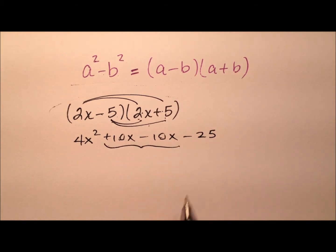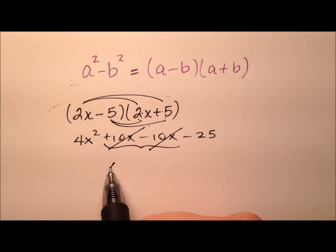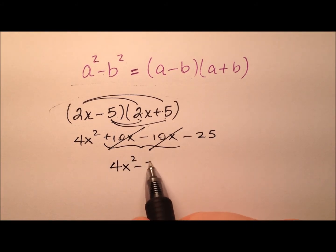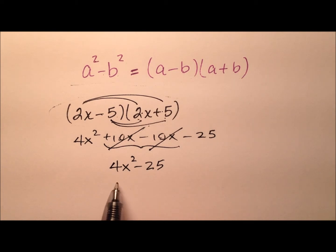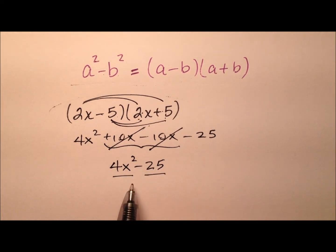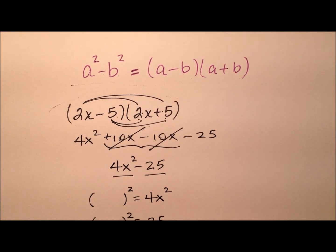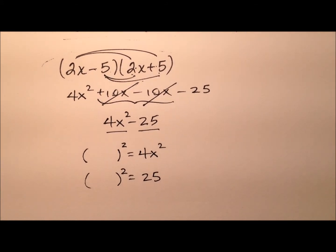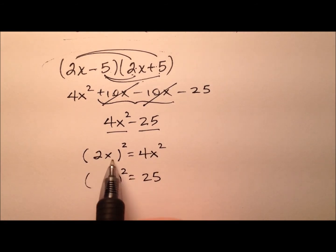What's interesting is that our middle terms actually cancel. So we're left with 4x squared minus 25, which is in fact the difference of two perfect squares. To go backwards, ask yourself: what got squared to give me 4x squared? And what got squared to give me 25? What got squared to give us 4x squared? It was 2x.